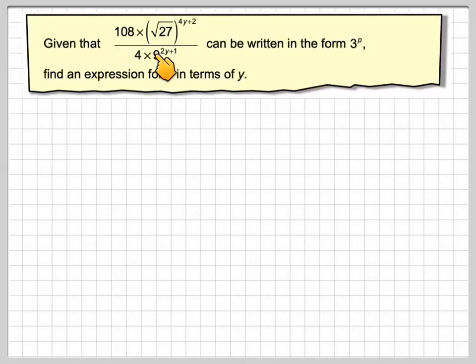Given that 108 times the square root of 27 to the power of 4y plus 2 divided by 4 times 9 to the 2y plus 1 can be written in the form 3 to the power of p, find an expression for p in terms of y.